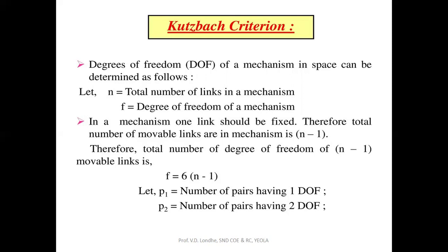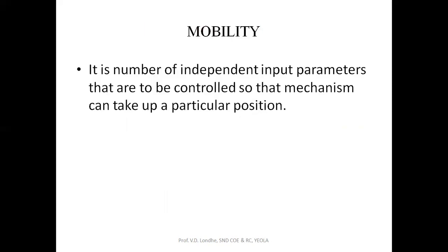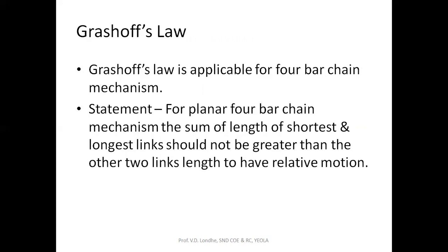Mobility is the number of independent input parameters that must be controlled so that a mechanism can reach a particular position — we control the input to get the desired output. Grashof's law applies to the four-bar chain mechanism and was developed by the scientist Grashof. Its statement is: for a four-bar chain mechanism, the sum of the lengths of the shortest and longest links should not be greater than the sum of the lengths of the other two links — then there will be relative motion.